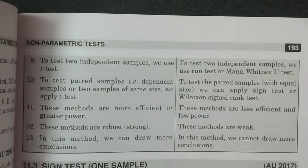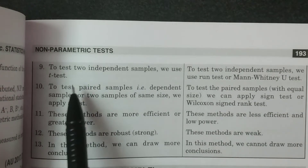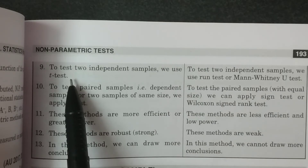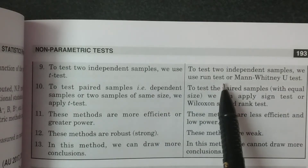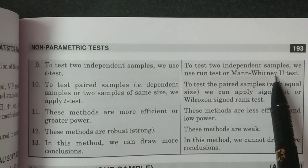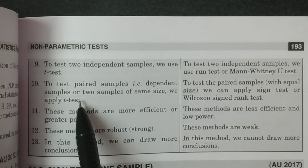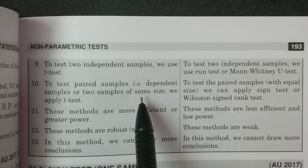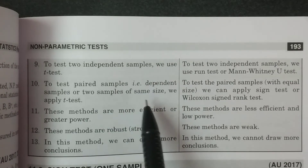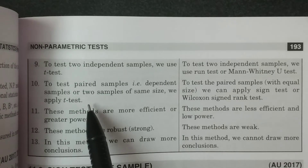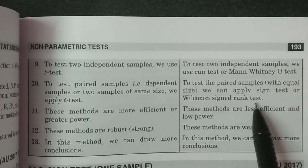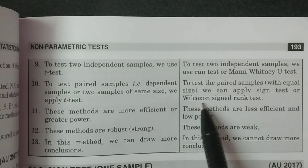In parametric methods, to test two independent samples, we use the t-test. In the non-parametric method, to test two independent samples, we use the run test or Mann-Whitney U test. For paired samples — that is, dependent samples of the same size — we use the t-test in parametric methods, whereas in non-parametric methods, we apply the Wilcoxon signed rank test.